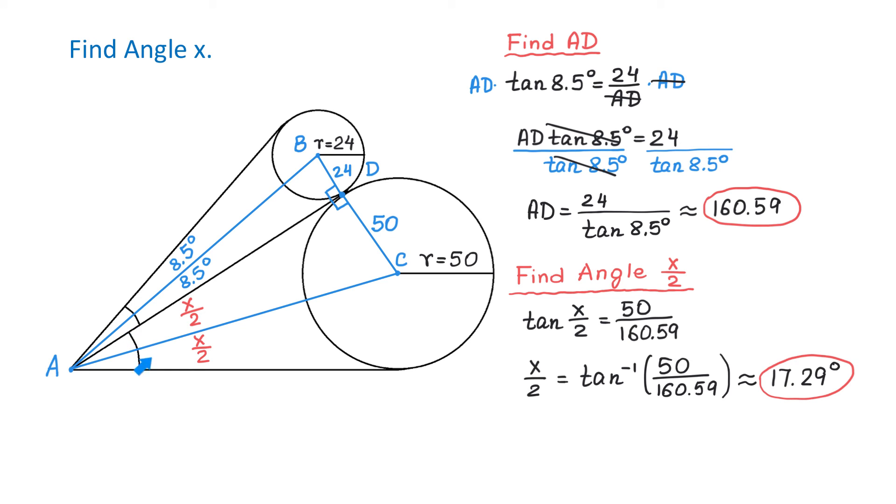To find angle x, we will multiply 17.29 by 2. Then x equals 17.29 multiplied by 2, which makes 34.58 degrees.